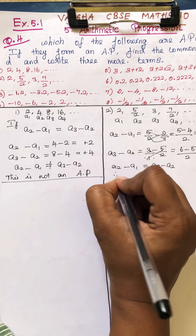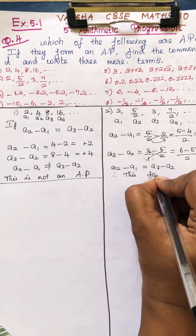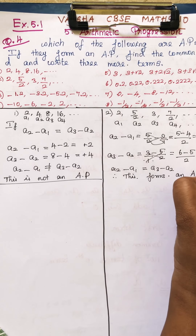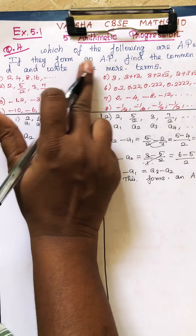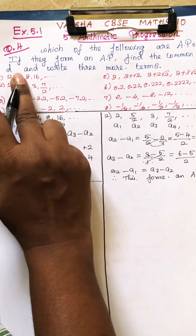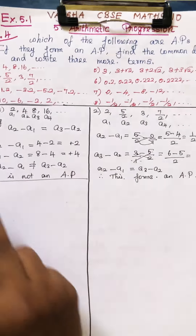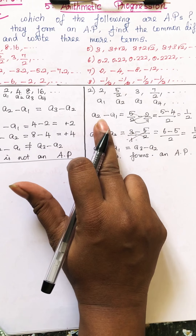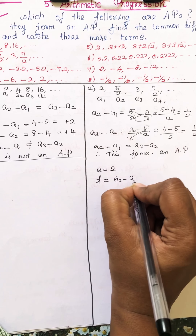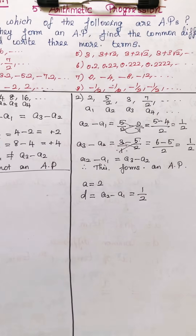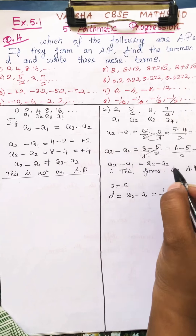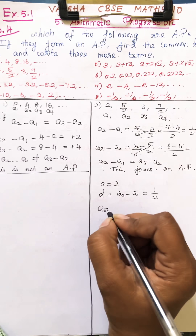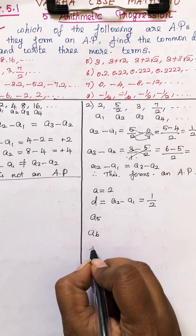Therefore this series forms an AP. Since it forms an AP, find the common difference D and write 3 more terms. The first term is 2 and the common difference D equals 1/2. We need to find A5, A6, and A7.